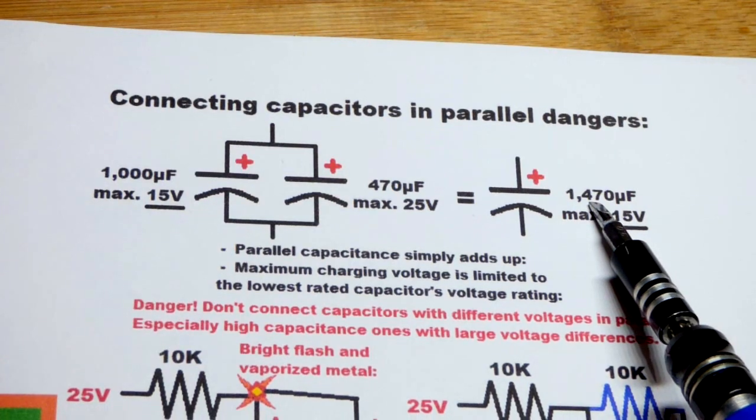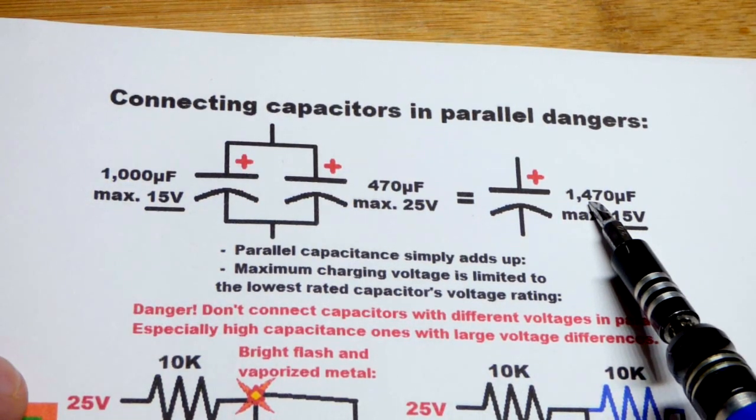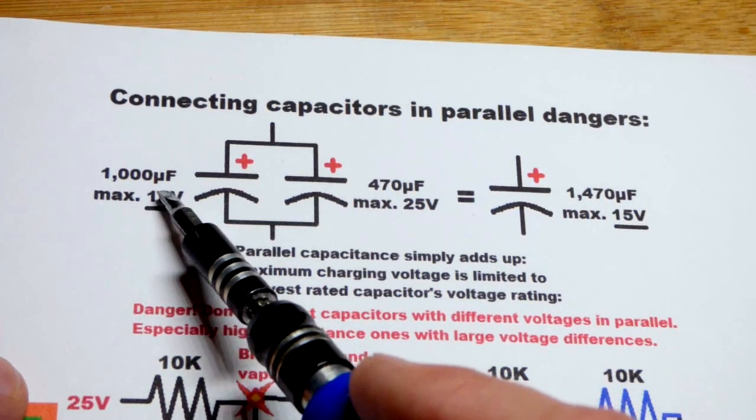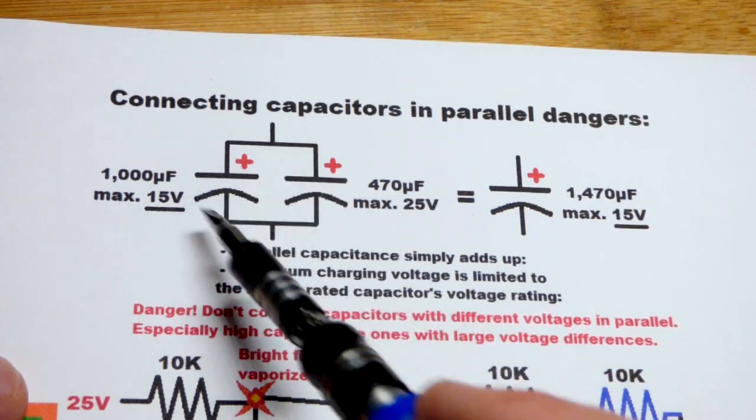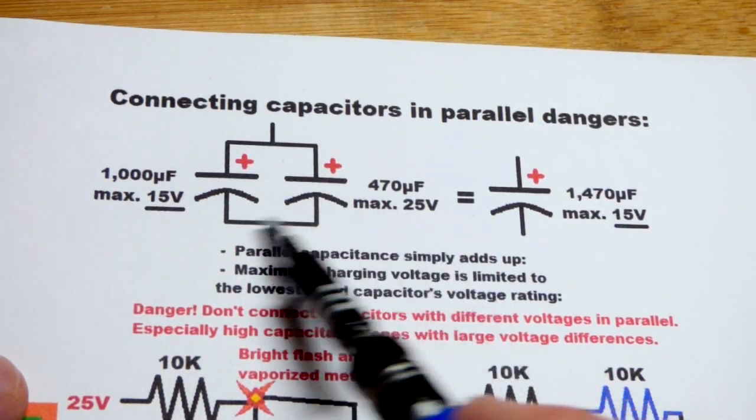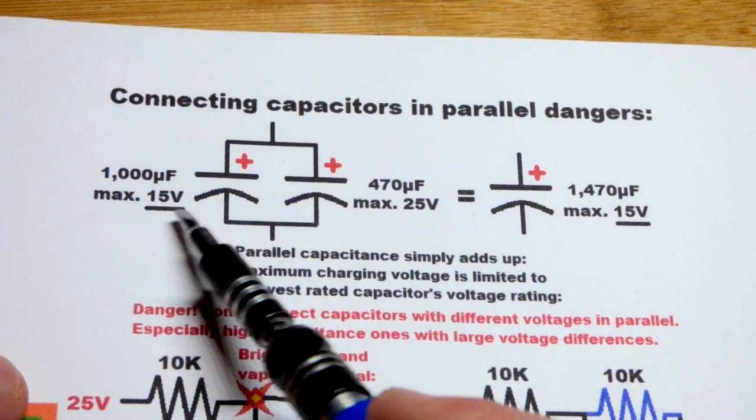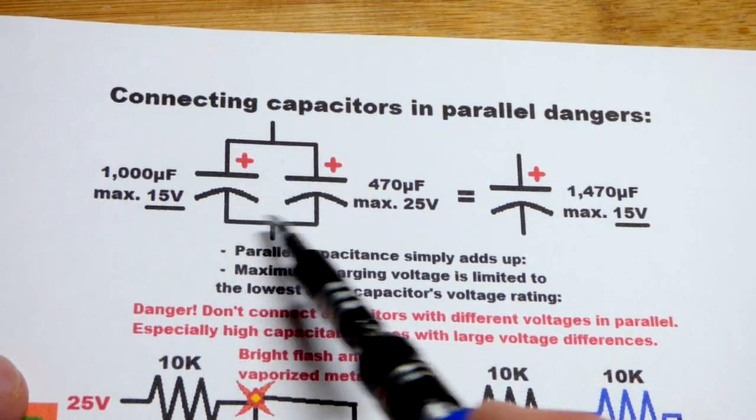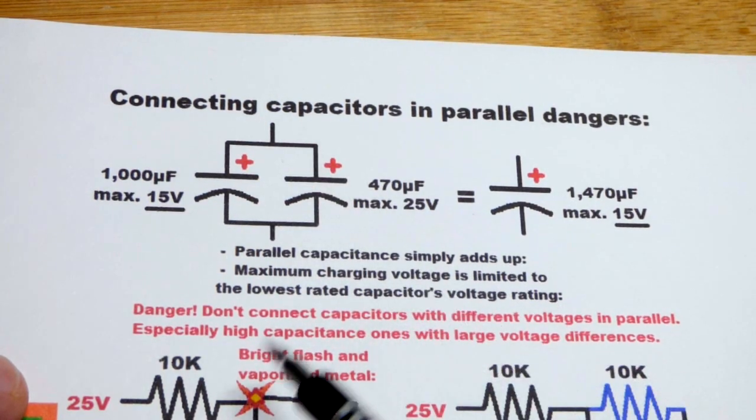And so if you need 1400 to 1500 microfarads for whatever reason, you could combine a 1000 microfarad with the 470 in parallel. Now, they may have different voltages that they can handle and they will have the same voltage across them at all times once you connect them in parallel.